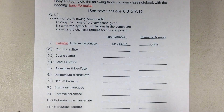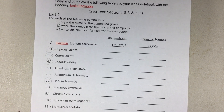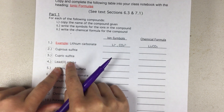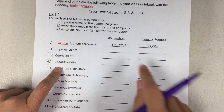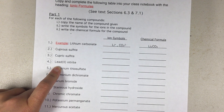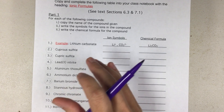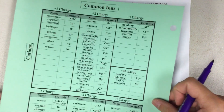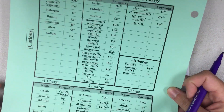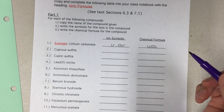We'll get into this with part one, where we are given the compound names. First we're asked to give the ion symbols, and then from there the chemical formulas. When you're given the name first, what you want to do is use your ion list to find the formula or the ion symbols for each part of the name.